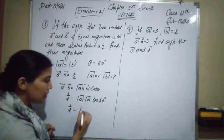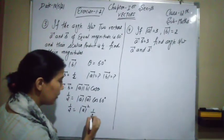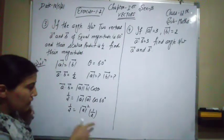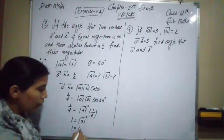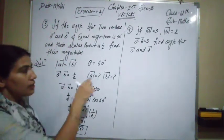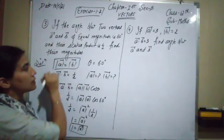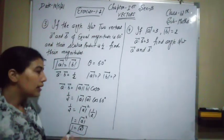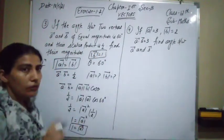So |a⃗|² = 1, which means |a⃗| = 1. Since the magnitudes of a⃗ and b⃗ are equal, |b⃗| is also equal to 1. Come to the next question now.